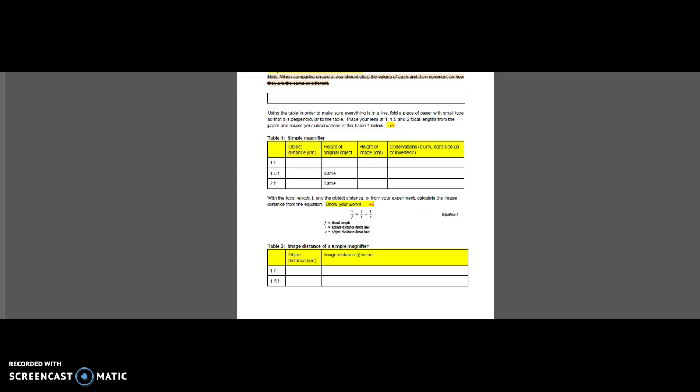So my object distance for part 1 where you had a single lens, you would have put right here or here or here. So this is where you would have your object distance. And from whatever numbers you had in these spaces right here, you would calculate the image distance.